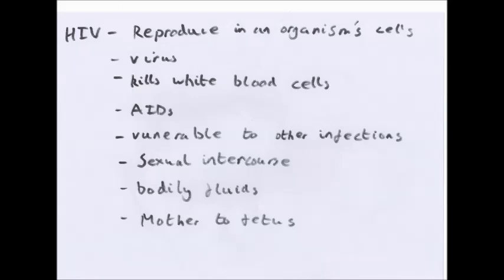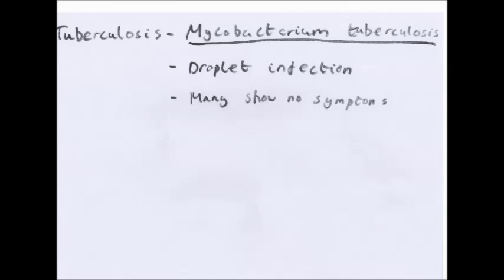Tuberculosis is caused by Mycobacterium tuberculosis — you have to know that. Please note it is capital M for Mycobacterium, small t for tuberculosis, and it should be underlined to show it is in italics. This also counts in the biodiversity classification section, so remember to do that.